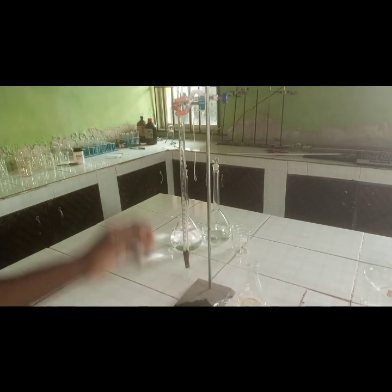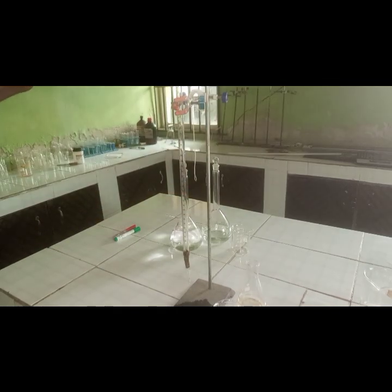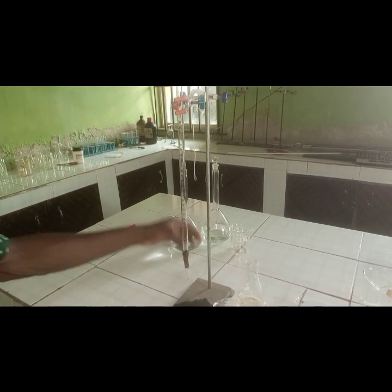Rinse the conical flask with water and rinse the pipette with the solution it's meant to contain. And at the same time, when filling the burette or after filling the burette before you start titration, you have to remove the funnel so that you won't keep titrating while the funnel tops it up for you. So that is it.